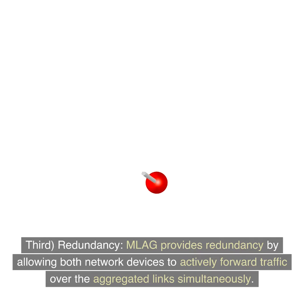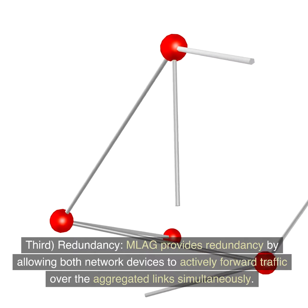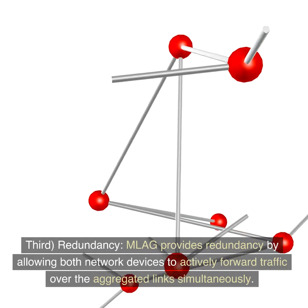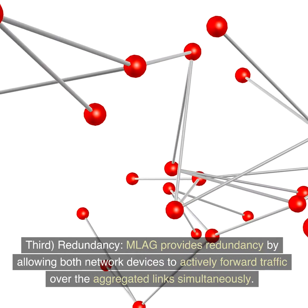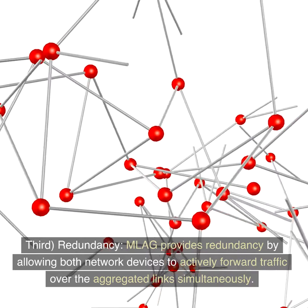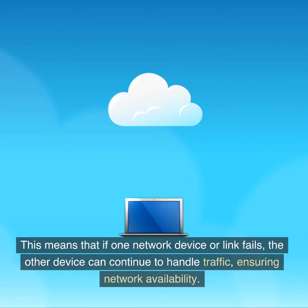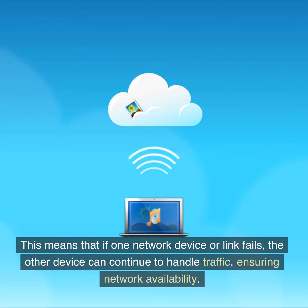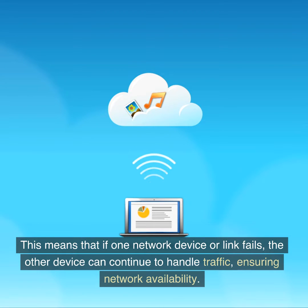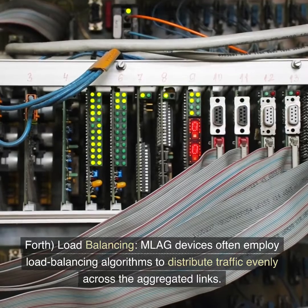Third, redundancy. MLAG provides redundancy by allowing both network devices to actively forward traffic over the aggregated links simultaneously. This means that if one network device or link fails, the other device can continue to handle traffic, ensuring network availability.